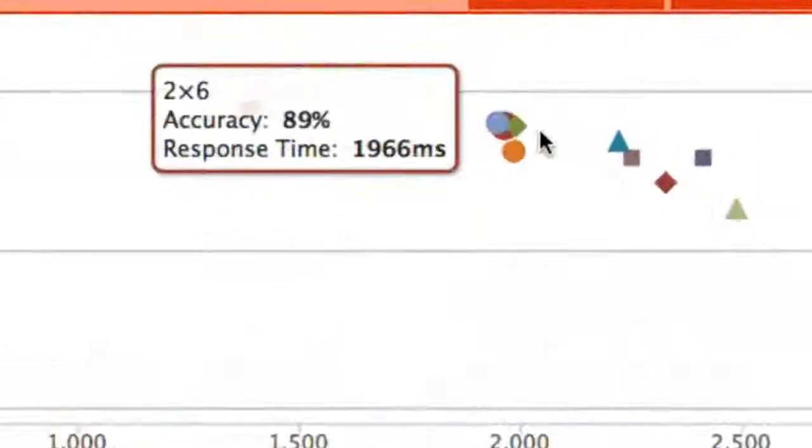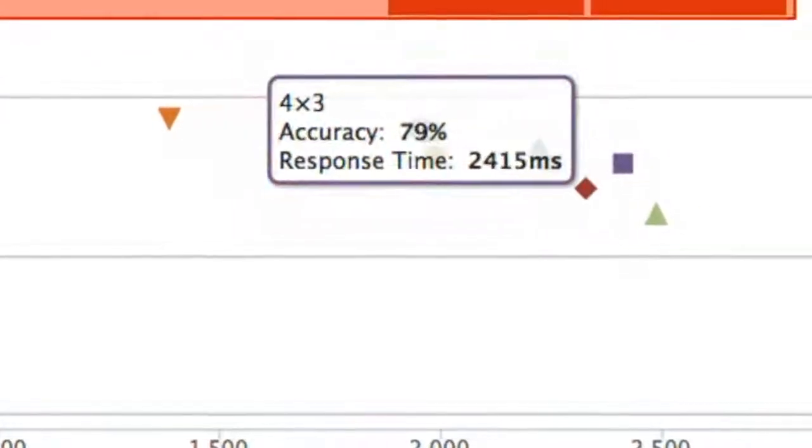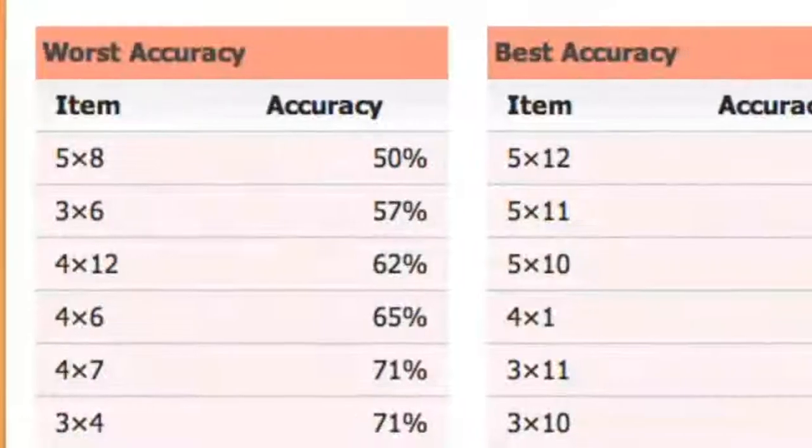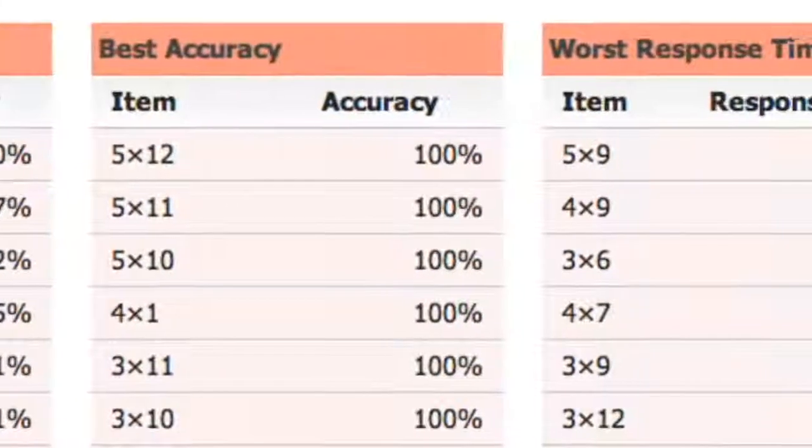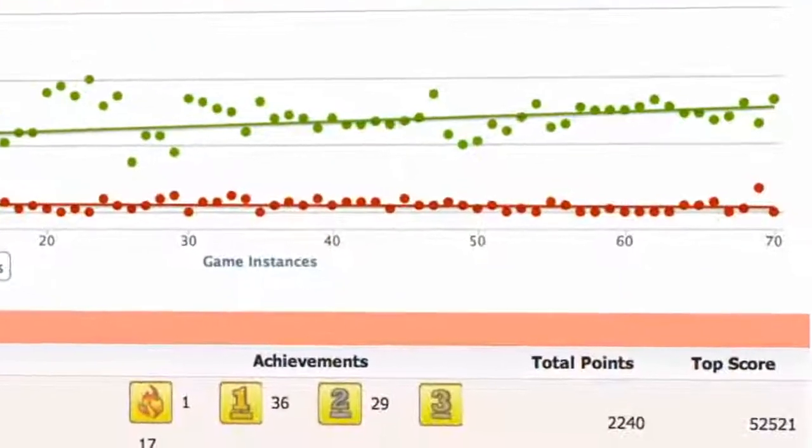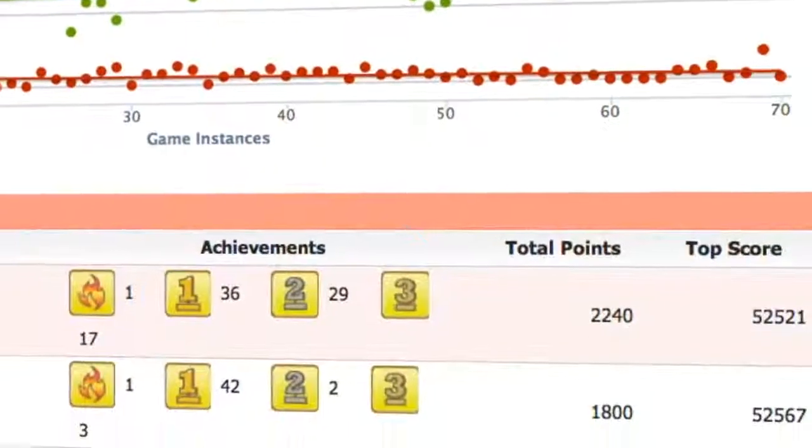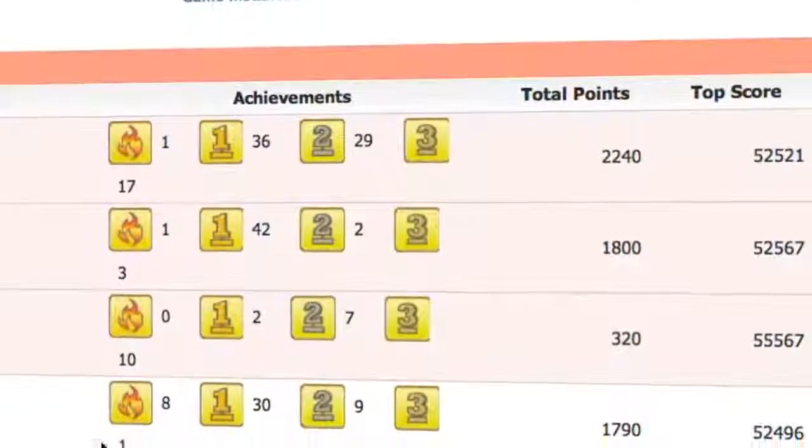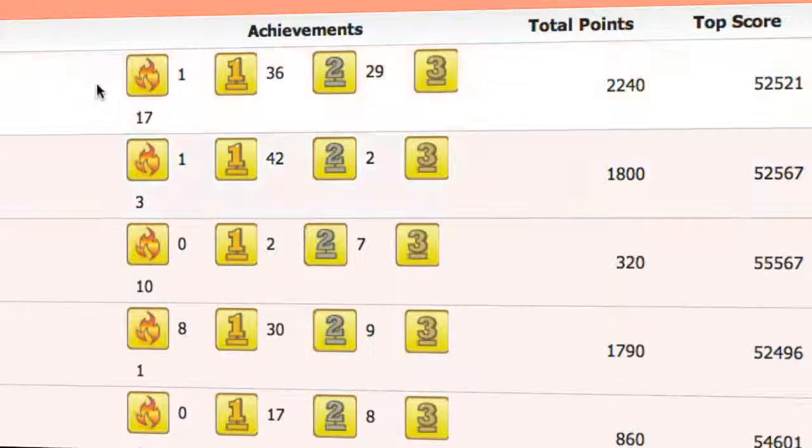The item analysis chart shows which items are the easiest for the students, which ones are the most difficult, and which ones take the longest to answer. With the leaderboard report, students are listed in leaderboards by achievement points and also by race times. This can be used to conduct class contests and award performance.